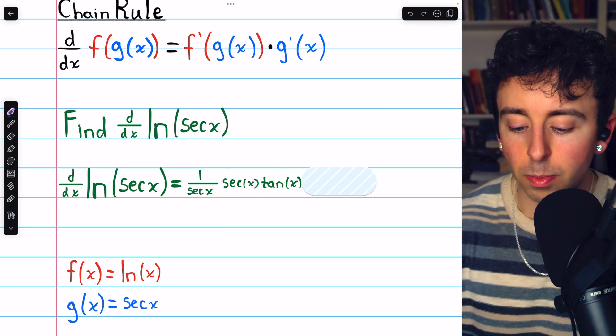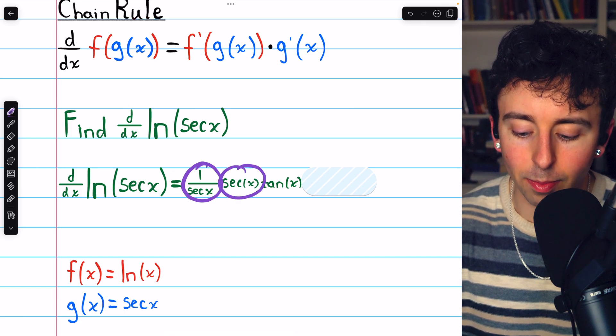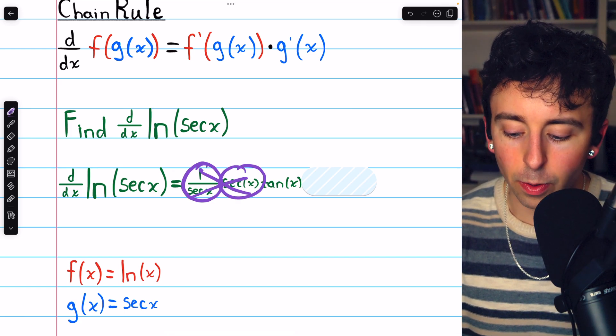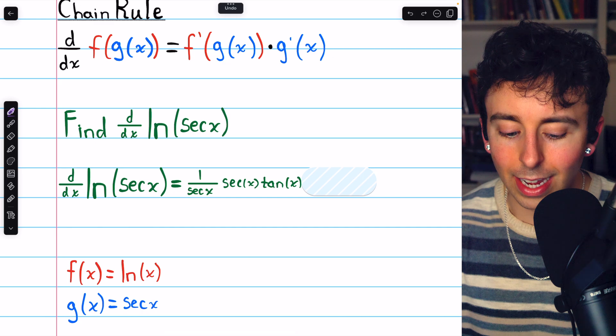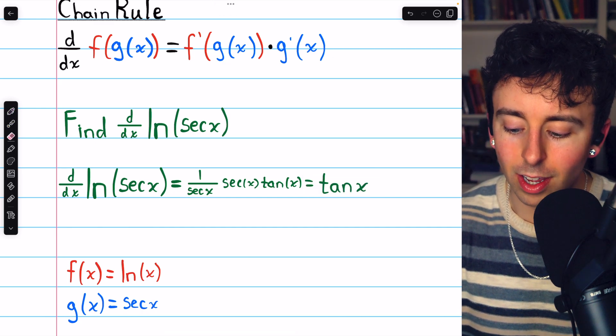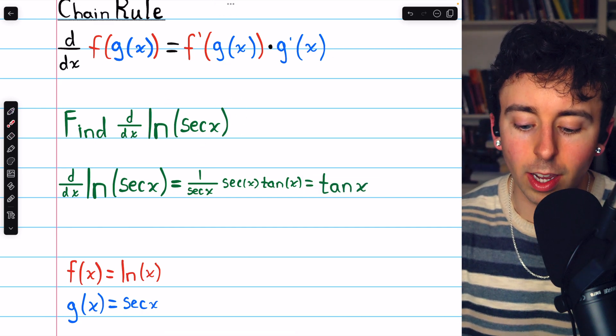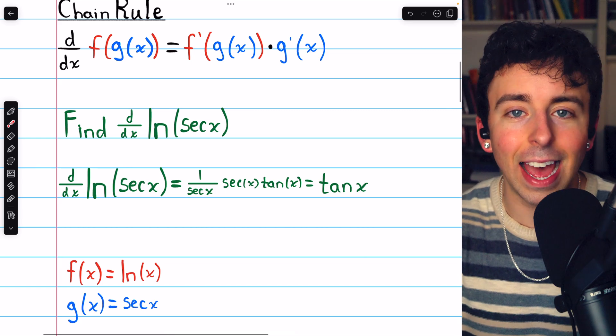Then, of course, there's some nice simplification. 1 over secant x times secant x. Those cancel out. And so we're left, as our final answer, with just tangent of x. The derivative of the natural log of secant x is tangent x.